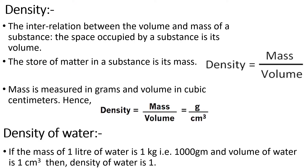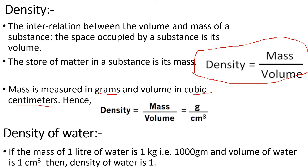The next property of water is density — the interrelation between the volume and mass of a substance. The space occupied by the substance is its volume, and the store of matter in a substance is its mass. Therefore, density is mass divided by volume. Mass is measured in grams and volume in cubic centimetres.